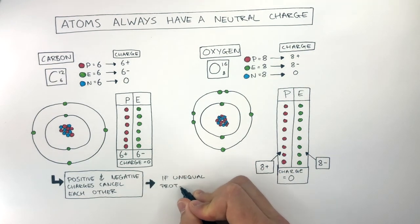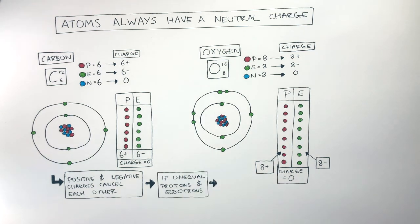If there are unequal protons and electrons, you have a charged atom. More electrons than protons, and it's negatively charged. Less electrons than protons, and it's positively charged.